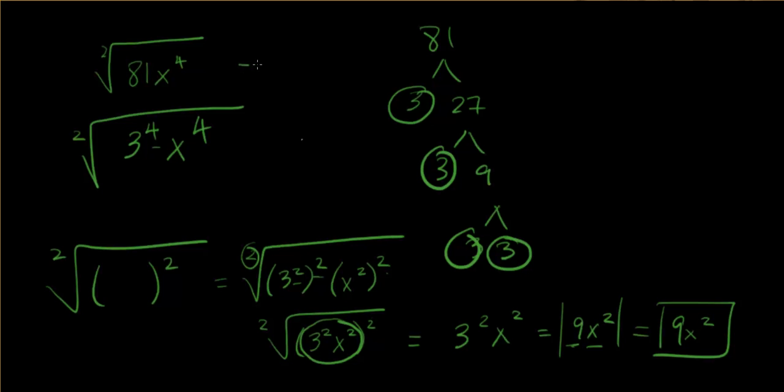Or we could just, well, not here. Here, we could just divide. So 4 divided by 2 is 3 to the 2nd, and 4 divided by 2 is x to the 2nd. And we have 9x to the 2nd.